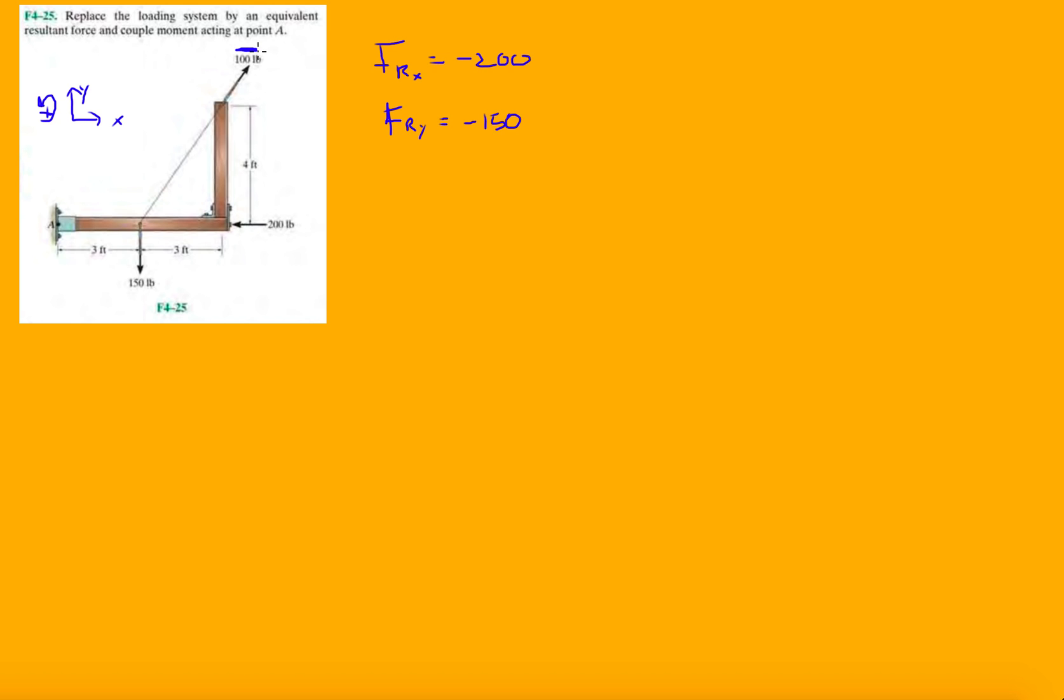In the x direction I have this -200 pound force. In the y direction I have -150. Now let's look at this 100 pound force up here - they give you a triangle 3-4-5. They just love these 3-4-5 triangles.